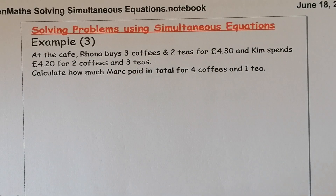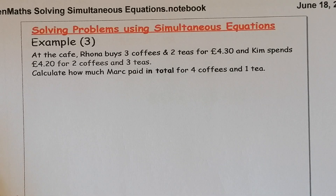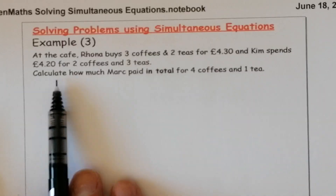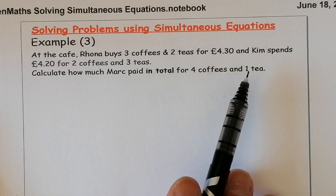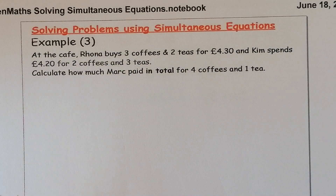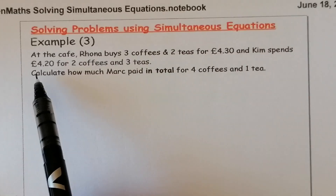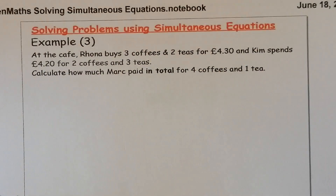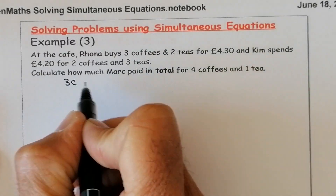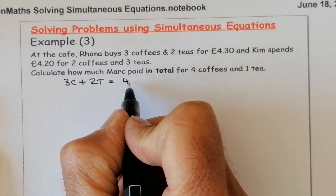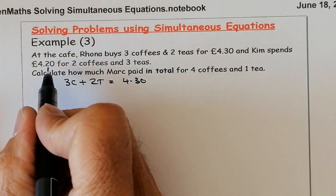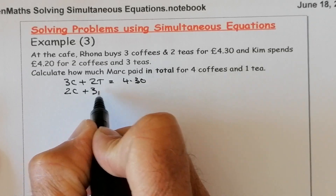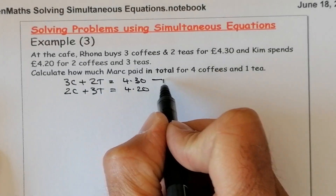We're going into a cafe. Rona bought three coffees and two teas for £4.30. Kim spent £4.20 on two coffees and three teas. We need to be careful what the question's asking: we have to calculate how much Mark paid in total for four coffees and one tea. The key is recognising this as a simultaneous equations question — first, we forget about Mark and find the cost of one coffee and one tea.